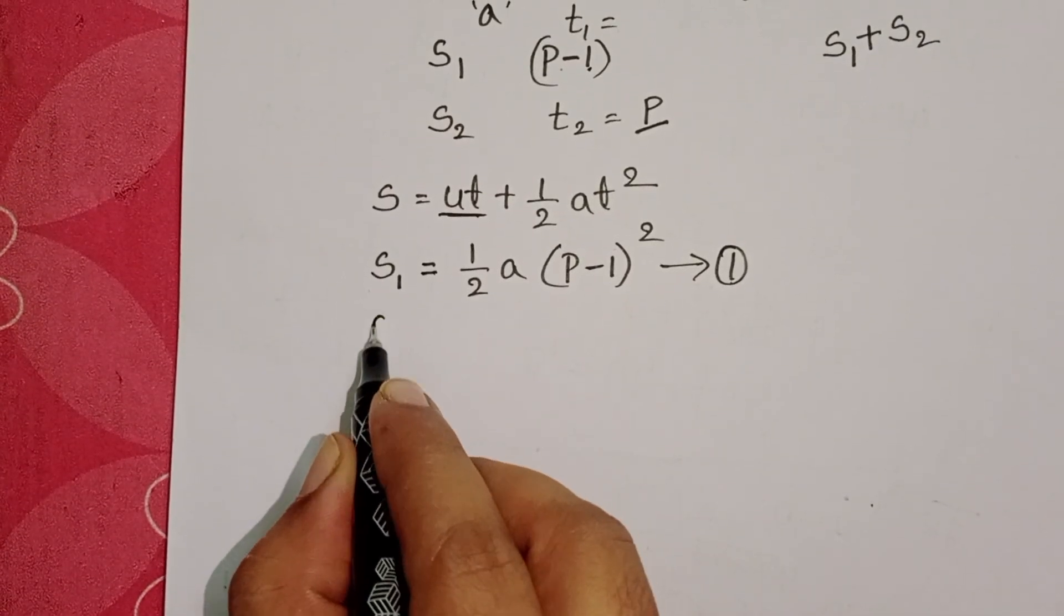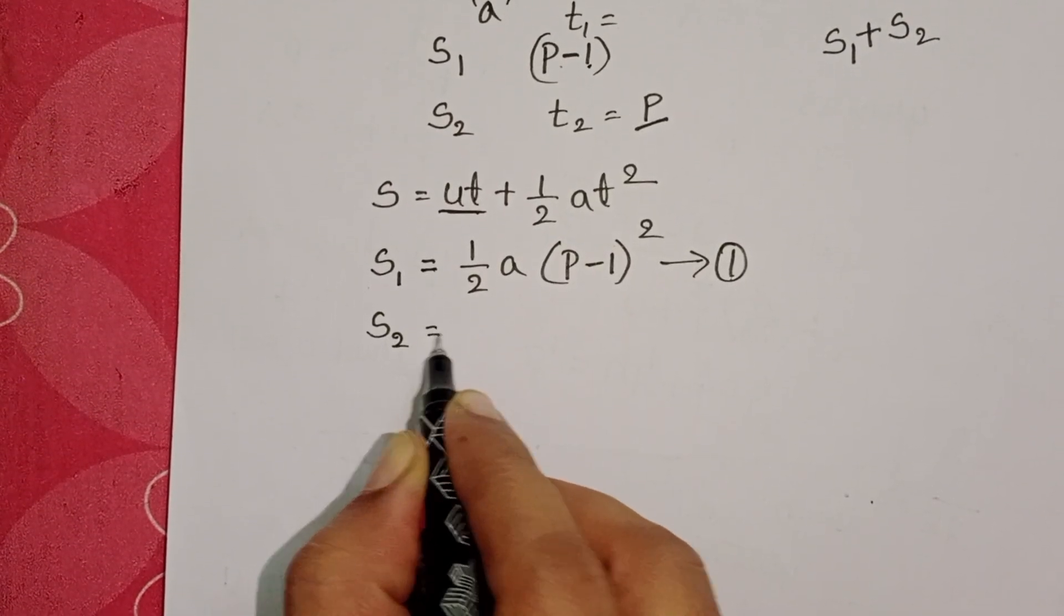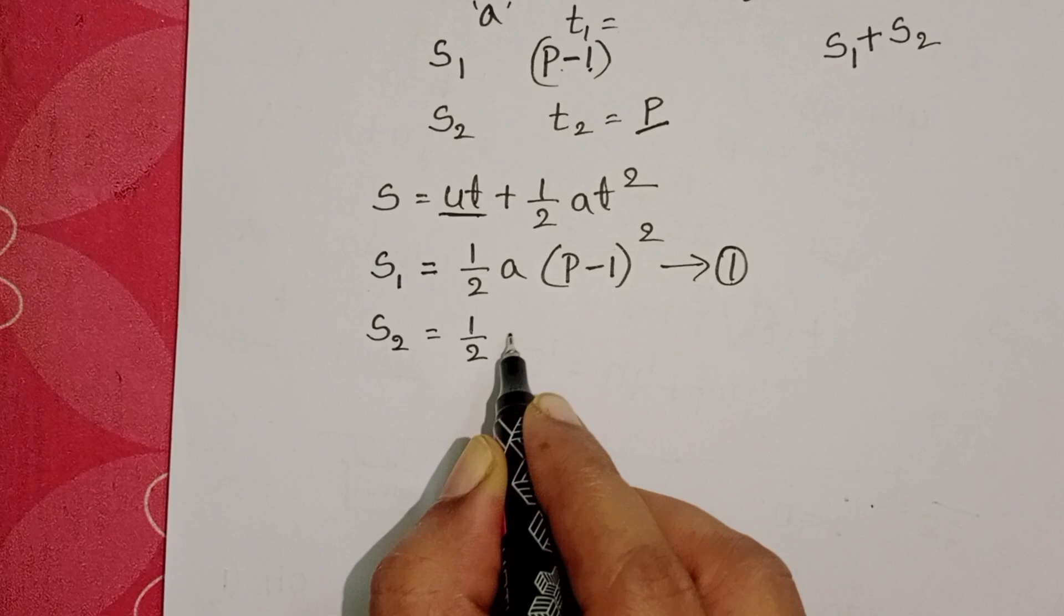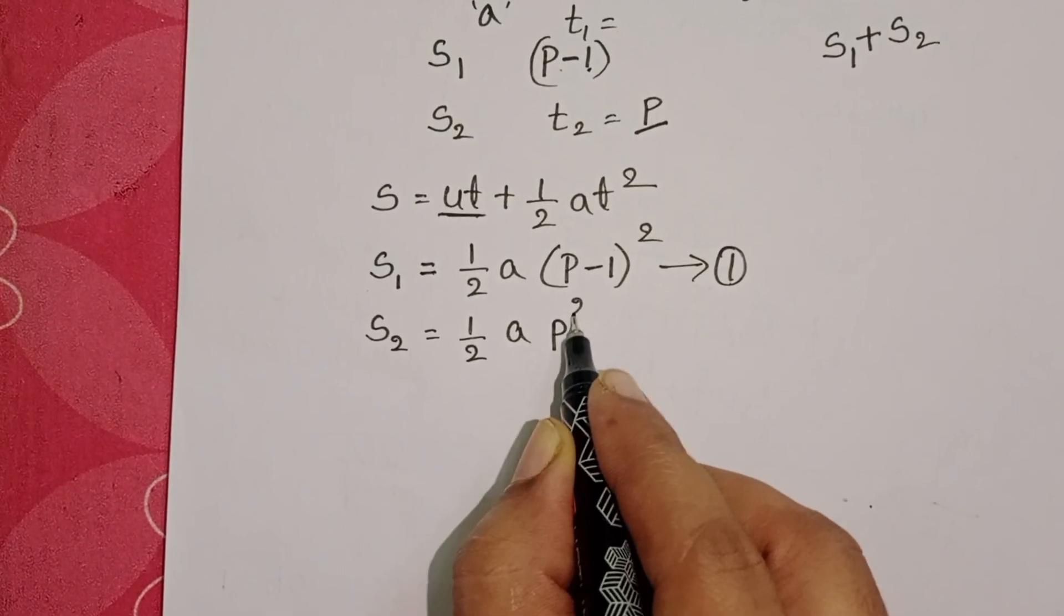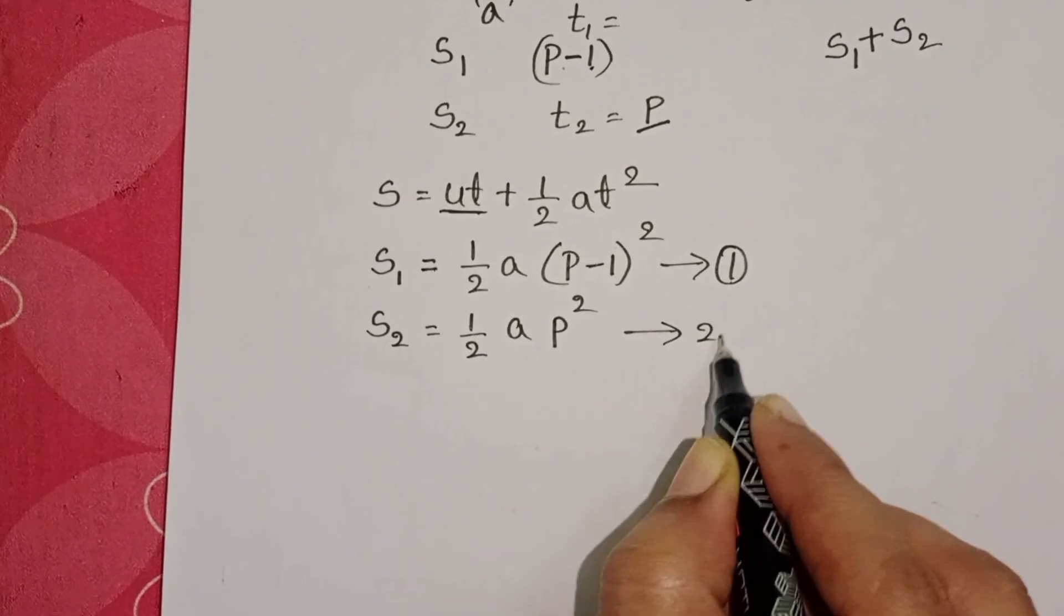After that, from starting onwards, S2 distance is travelled within the time P seconds. So S2 equals half A P square. This is equation 2.